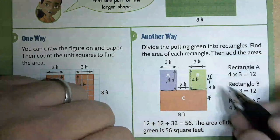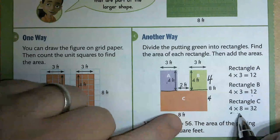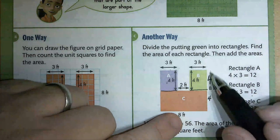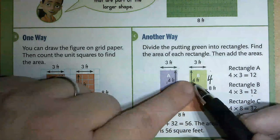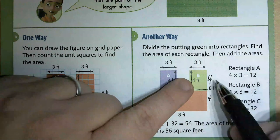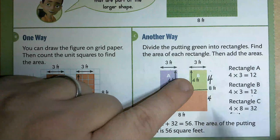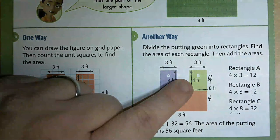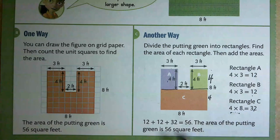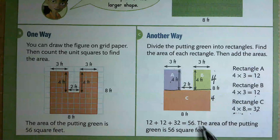Down here is where it gets a little tricky. I can't just use eight feet here because eight feet goes all the way across — I just want rectangle C. Over here it tells me this part is four feet. If the whole thing is eight feet, then four plus four equals eight, which is why rectangle C is four times eight = 32.